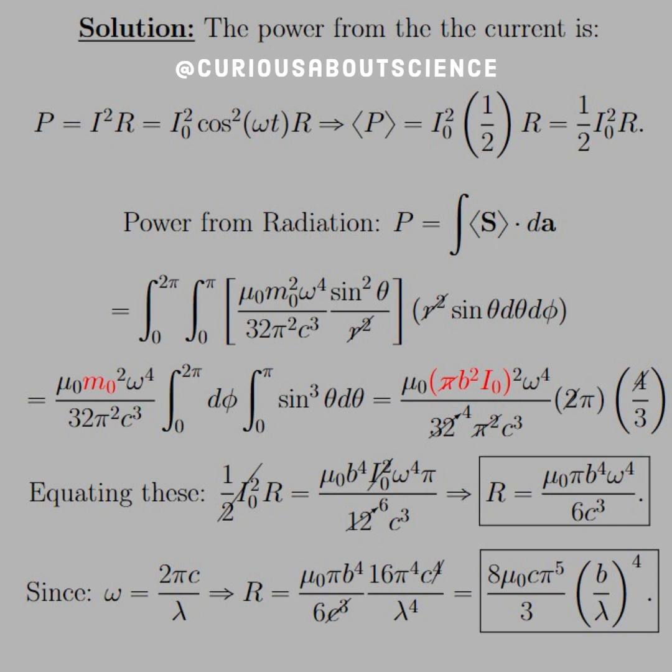Okay, so if we plug in that time average and the dA being the typical spherical case for the angles, you see we get the r's canceling. We like that. Now, let's bring all the constants out front, put up the integrals accordingly.